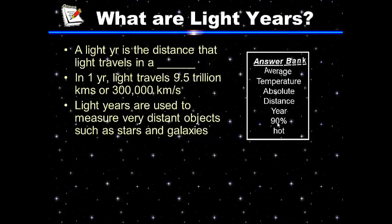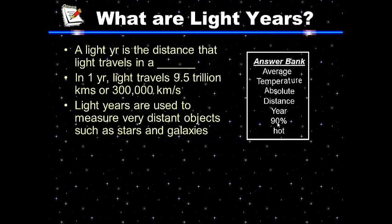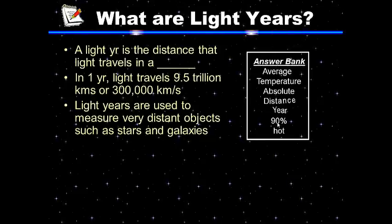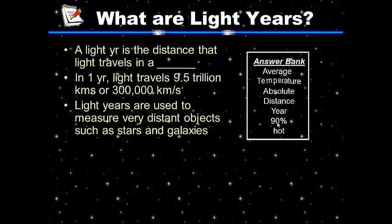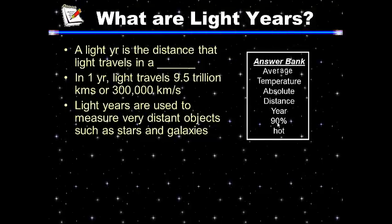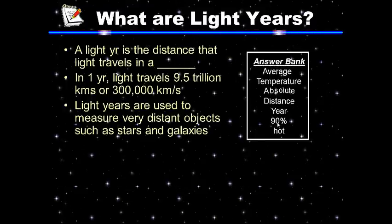For your notes, the light years question goes in the question section and the answer goes in the answer section. Please read the passage and use the answer bank to determine which word best completes the sentence. Use the answer bank words at the top of your notes — you should have six written down by the time you're done. Go ahead and pause while you write.